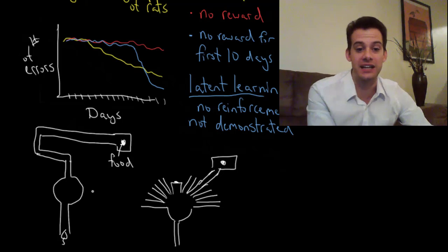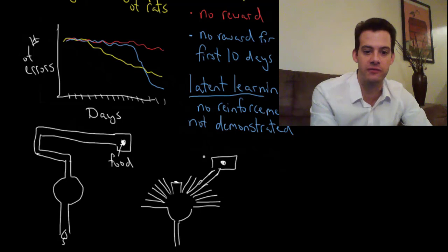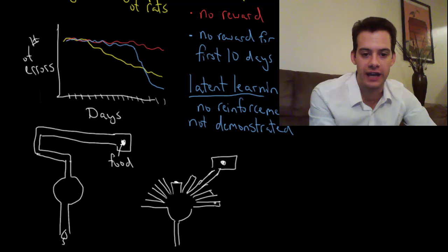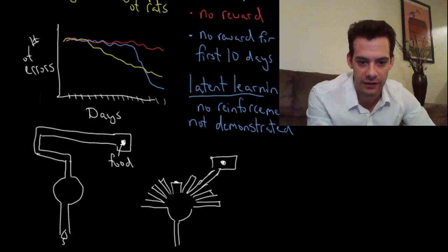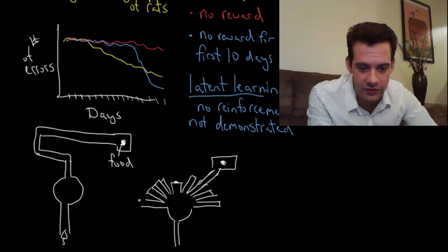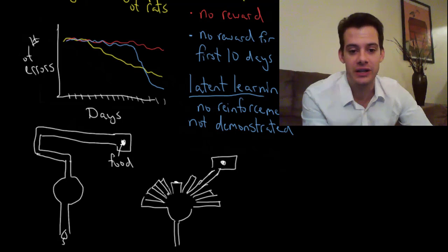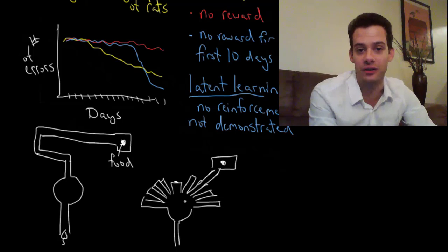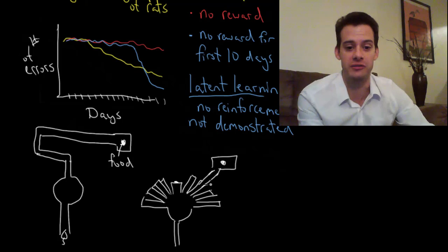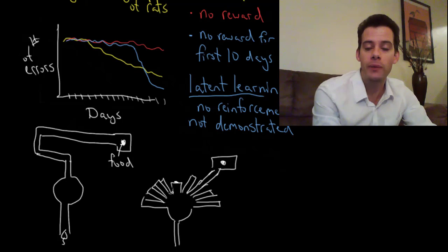So the question is which of these hallways will the rat run down? One of the ones angling off to the right actually went out to the food. The food was in the same general location that it was before, but now the rat's going to have to choose a new route to get there. I'll post a link to the original paper so you can see a diagram of what this actually looked like. This is a very rough approximation.